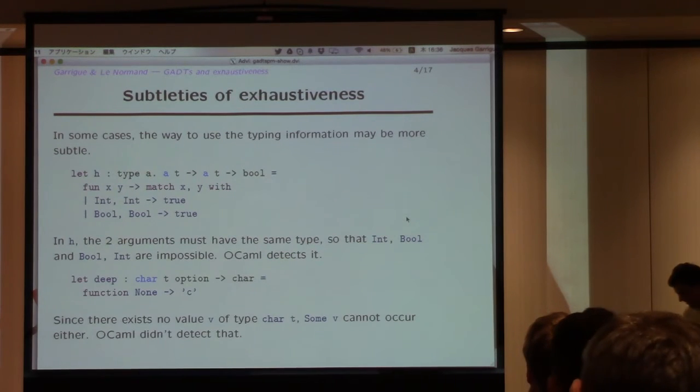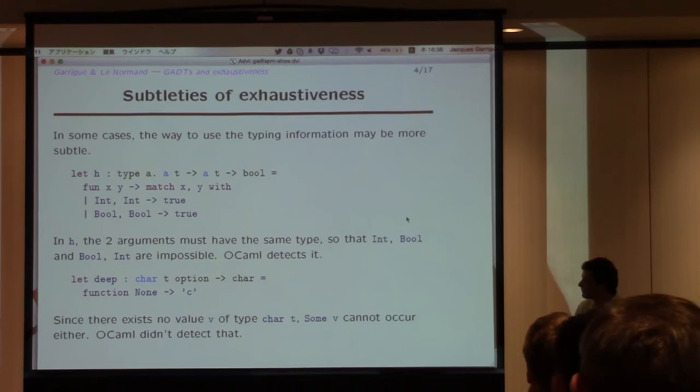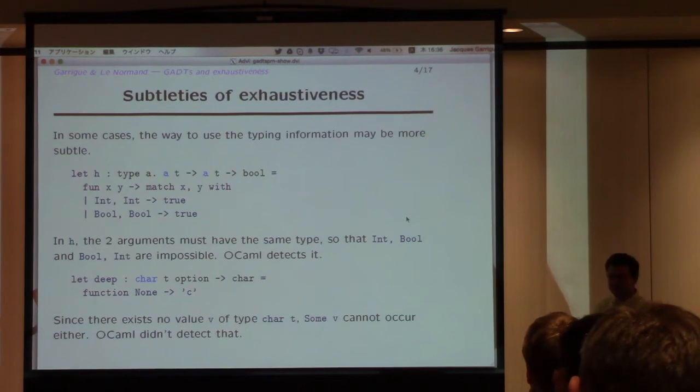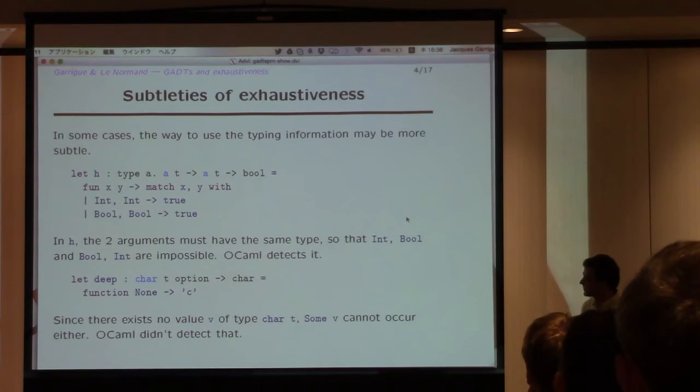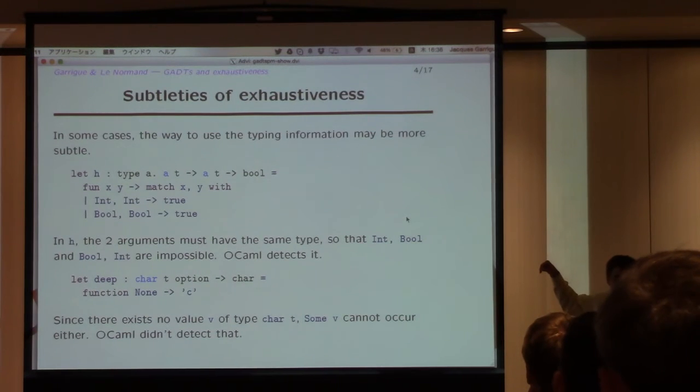But you have even stranger cases. And here is something that may look contrary, but actually is something close to that value cannot happen, really. So suppose that here I have this deep function, which is something quite static, just receiving a char t option. And my definition of t, I have only an int and bool cases, no char cases. So you see basically that char t is an empty type. So char t option, of course, cannot have a some case. So here, it's enough to handle the none case.